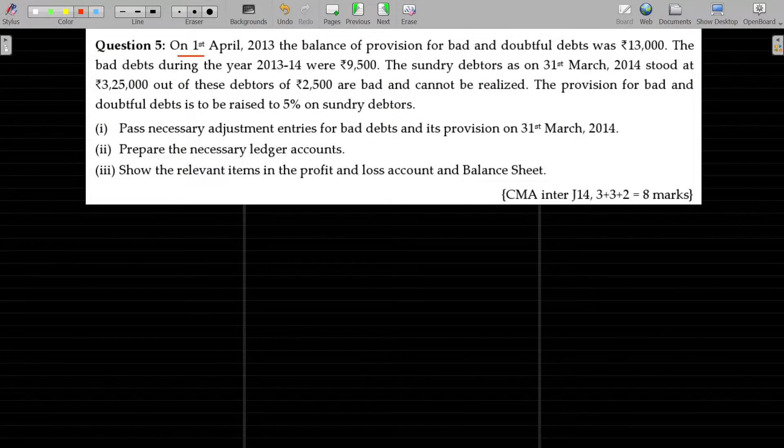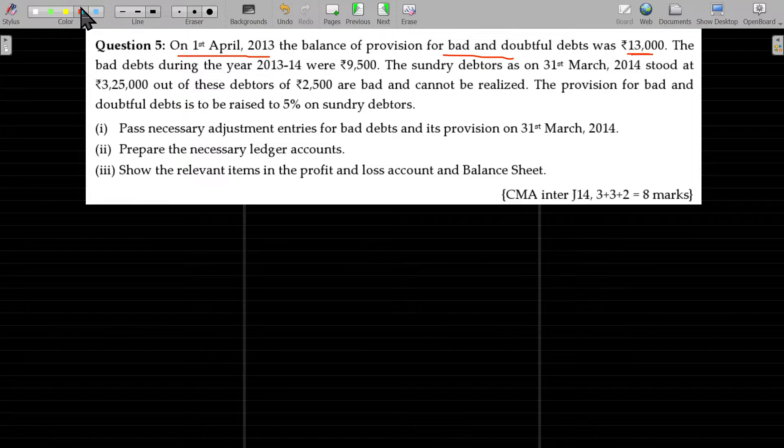Question number 5. On 1st April 2013, the balance of provision for doubtful debts was 13,000. Okay, this is opening provision.